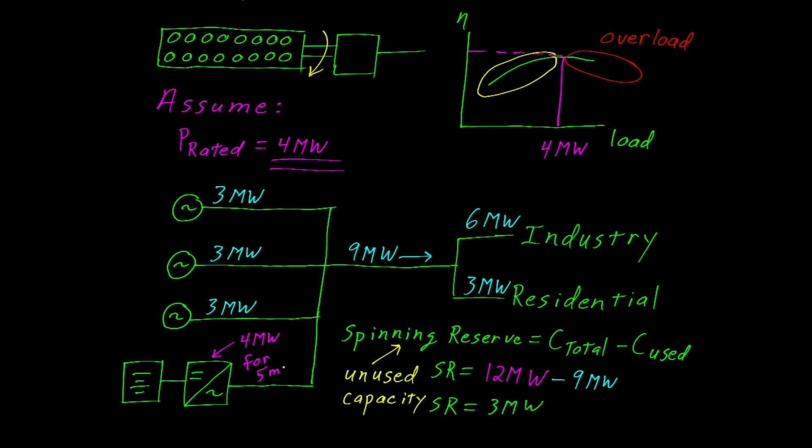Our spinning reserve now becomes 3 generators plus the power converter. So we have a total of 16 megawatts that's raring to go, ready to take the load at any moment. And we'll assume the town continues to consume 9 megawatts. So we now have a 7 megawatt spinning reserve.